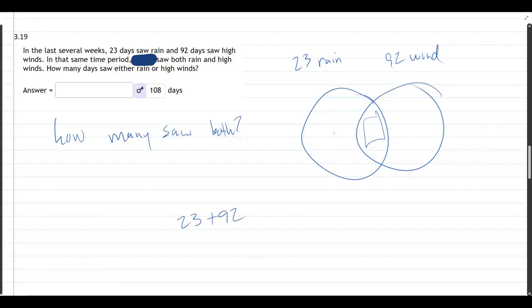we would be double counting what's in the middle because 23, how many are in this circle, 92, how many are in that circle, and if we add that number together, we're going to double count what's in the middle.